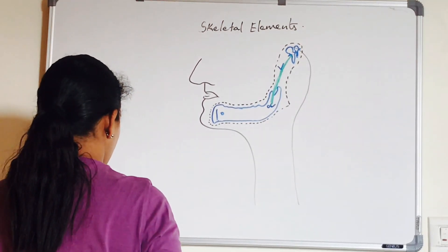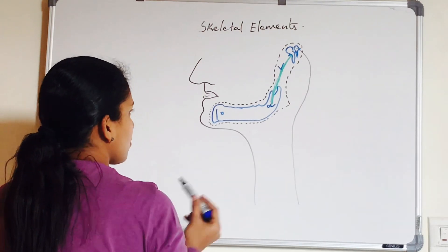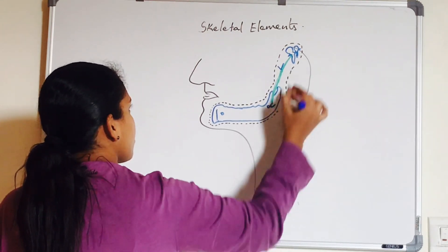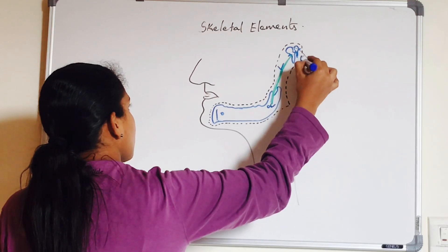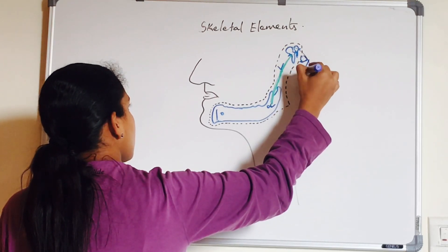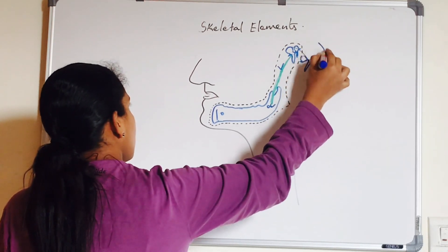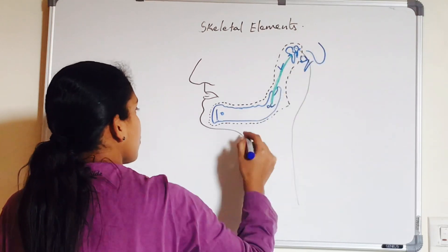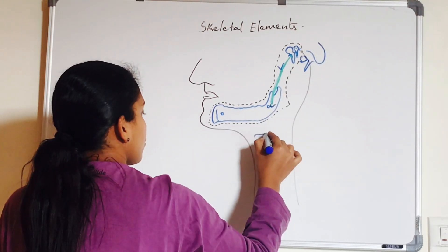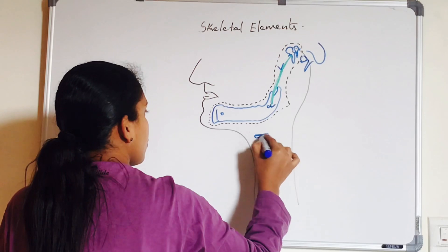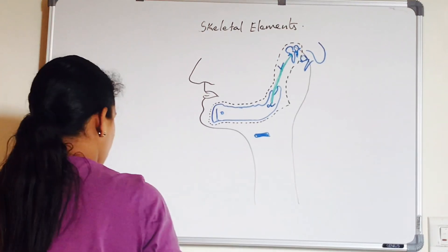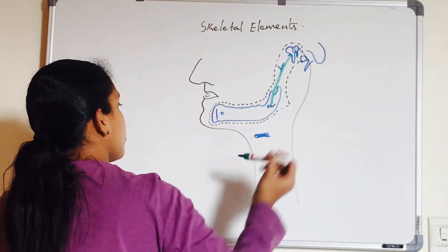Next, the second arch. Similarly, the cartilaginous bar of this second arch extends dorsally up to the cartilaginous ear capsule. So this forms one ear ossicle, that is stapes, and the succeeding part forms the styloid process of temporal bone.